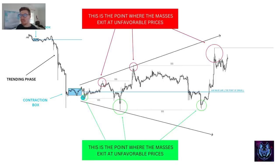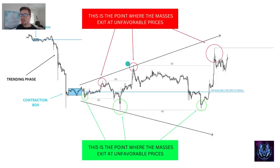What happens here? We've got this contraction zone. Then price expands out and down, up and down, up and down, completely confusing the market and liquidating — whether you get in short it liquidates you, whether you get in long it liquidates you. I'm sure you've experienced this before. These swing high and low points are the exact points where the masses make a mistake and get their stop losses hit. And these are the points where you want to enter.